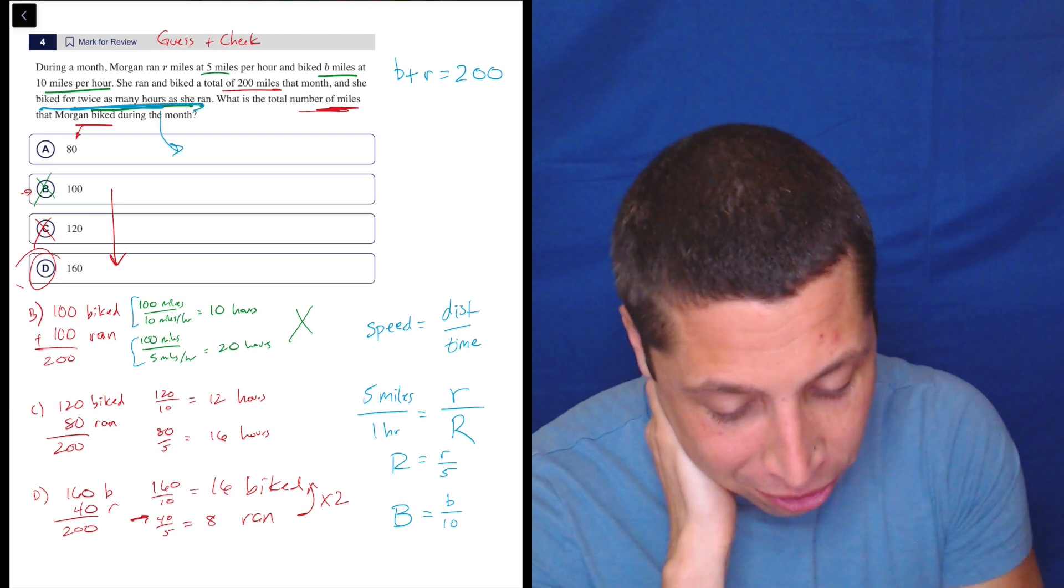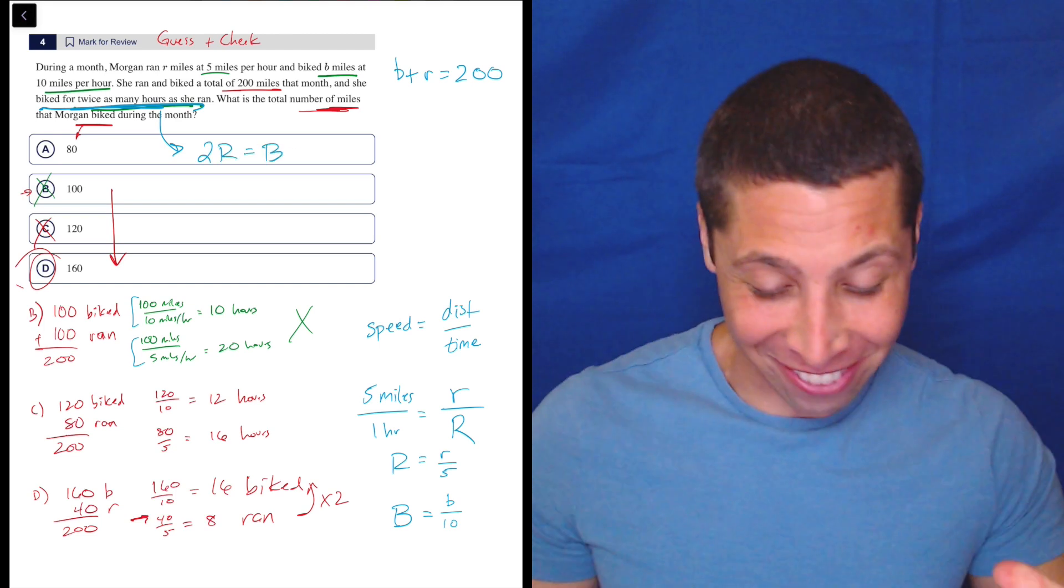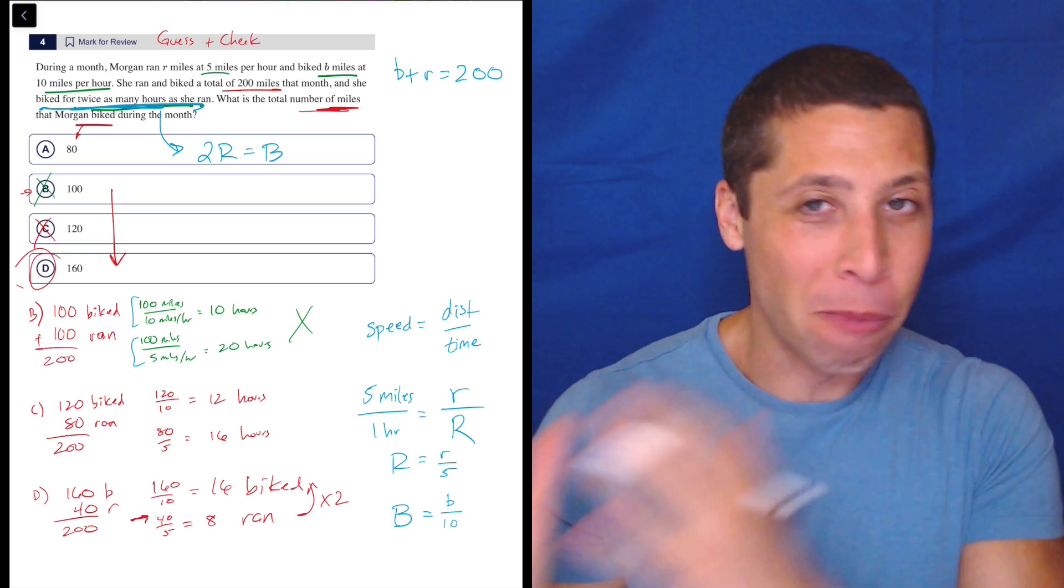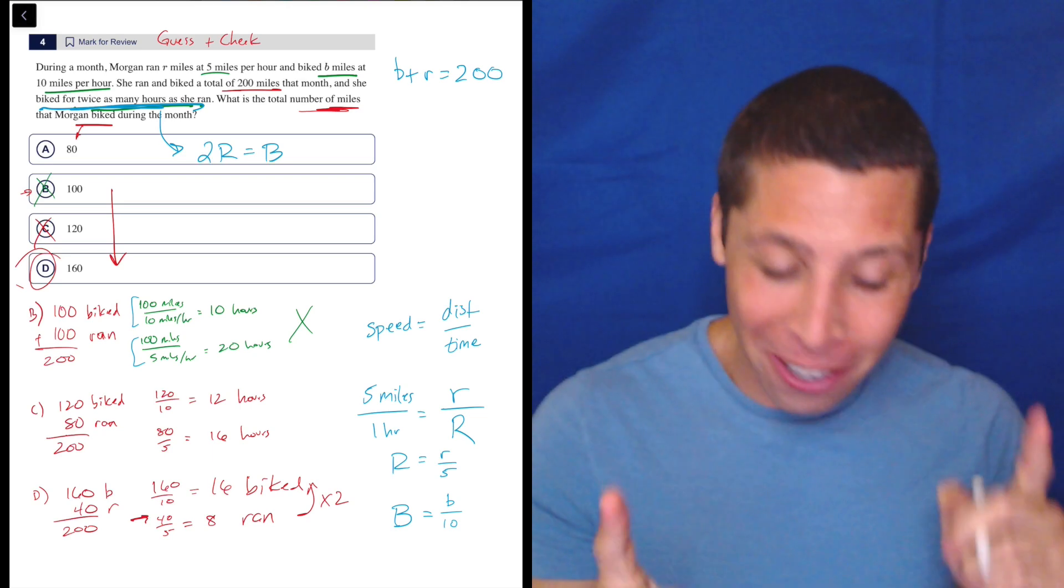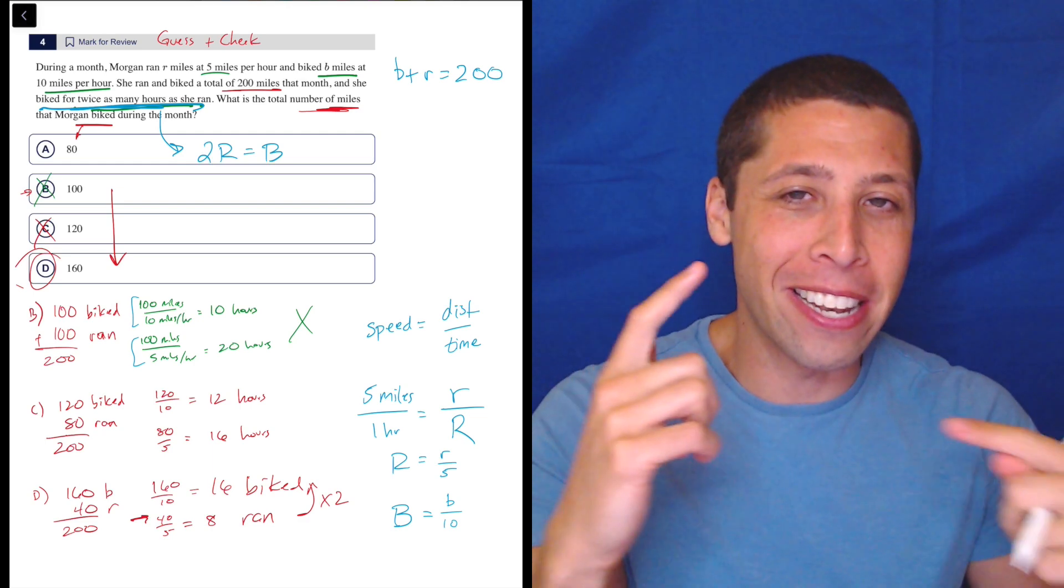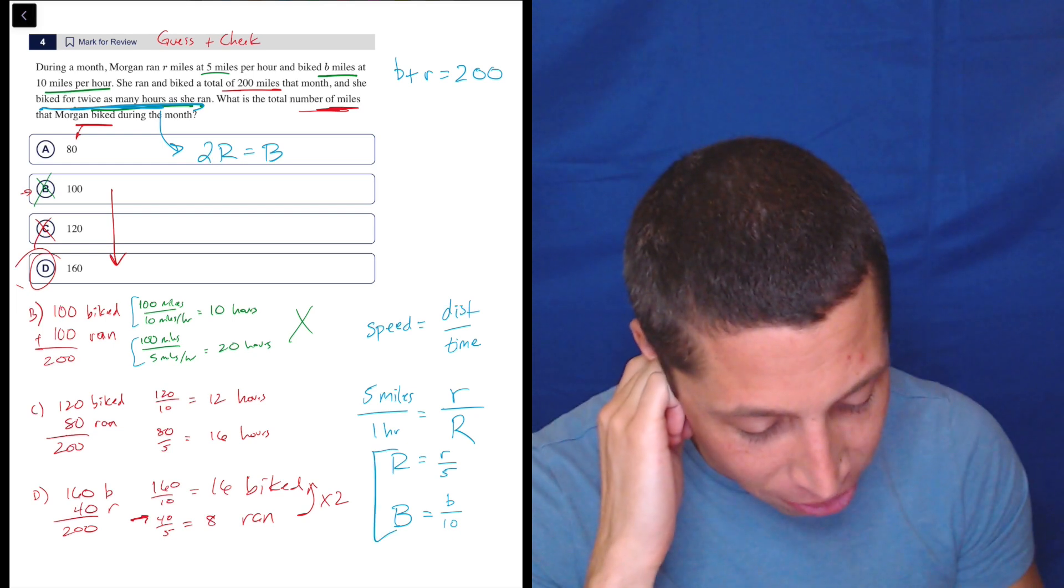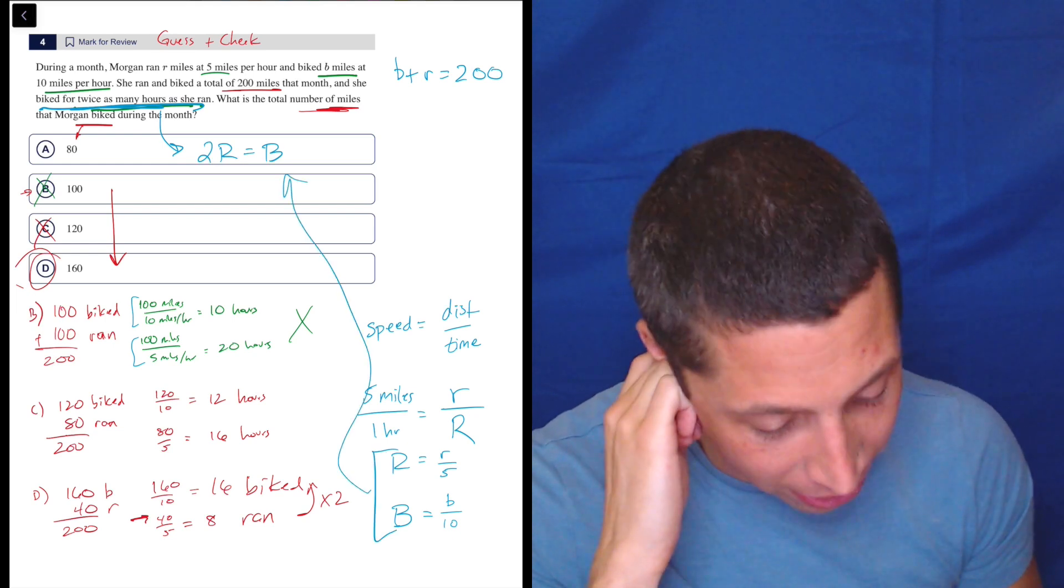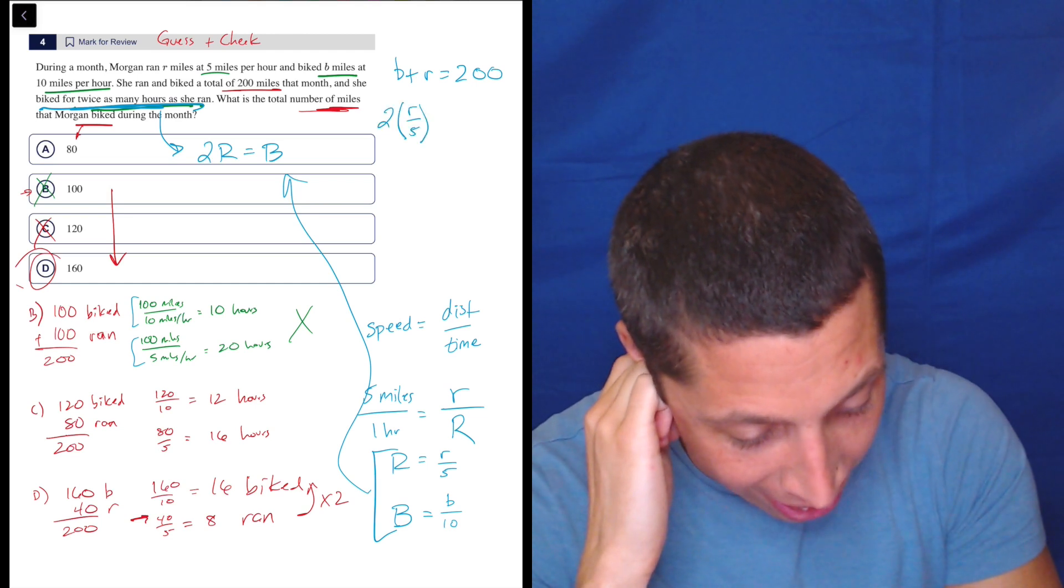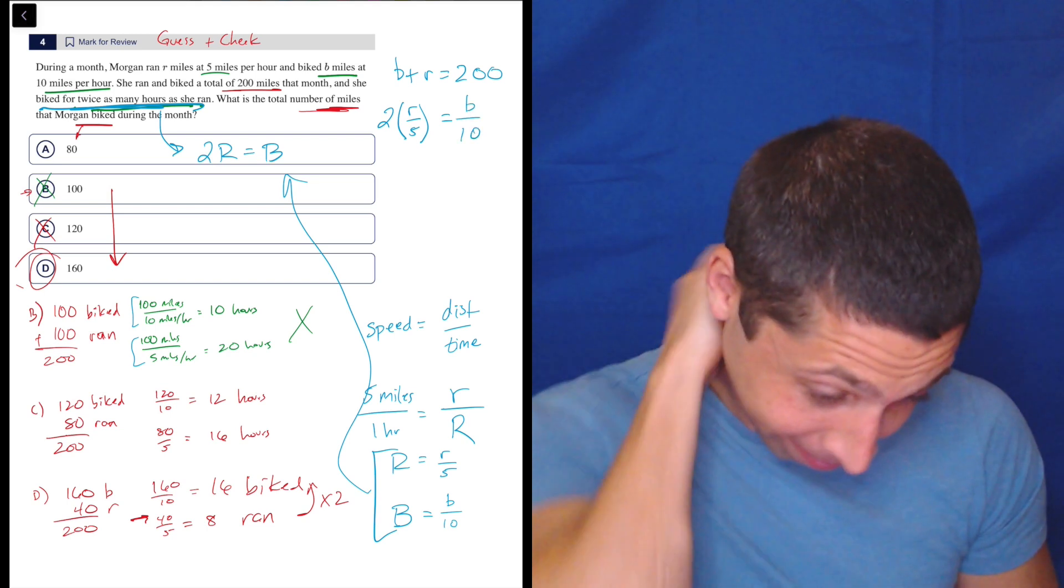And now I get back to this equation here. She biked for twice as many hours as she ran. So 2R, big R, is going to equal B. Let me just make sure that's right. She biked twice as many hours as she ran, so you take the number of hours that she ran and you multiply it by two. Part of me really wants it to be R equals 2B, but that's wrong. And again, this is why instructions are hard to follow when you're doing algebra - we can't really kind of check it as we go. But that should be it. Which means now if I take these two equations and substitute them in there, I get two times R over five is equal to B over 10. Oh my God, that's a crazy equation.